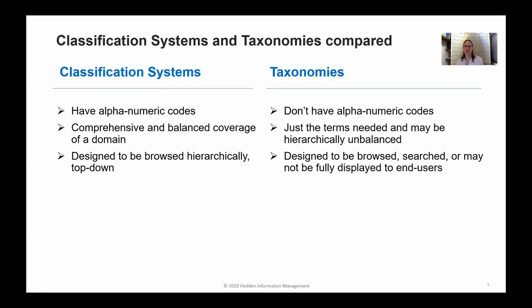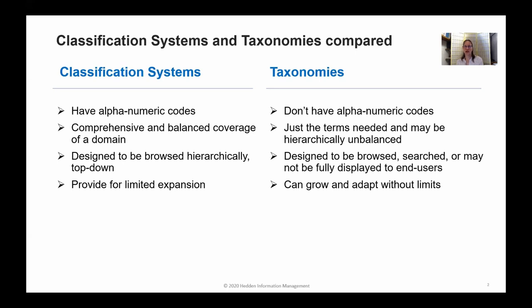Taxonomies, on the other hand, can be accessed different ways. They can be browsed hierarchically or they can be searched. Often a user will type in a search box, which will then match against terms in the taxonomy — they could be displayed in a type-ahead or search suggest. So the taxonomy might not be fully displayed to the end users. Classification systems do provide for some expansion, but it's limited. Remember that 'unassigned' category — we can always throw some things into 'other.' Whereas taxonomies, without that rigid alphanumeric system, can always have more terms added, so taxonomies can grow and adapt without limits.